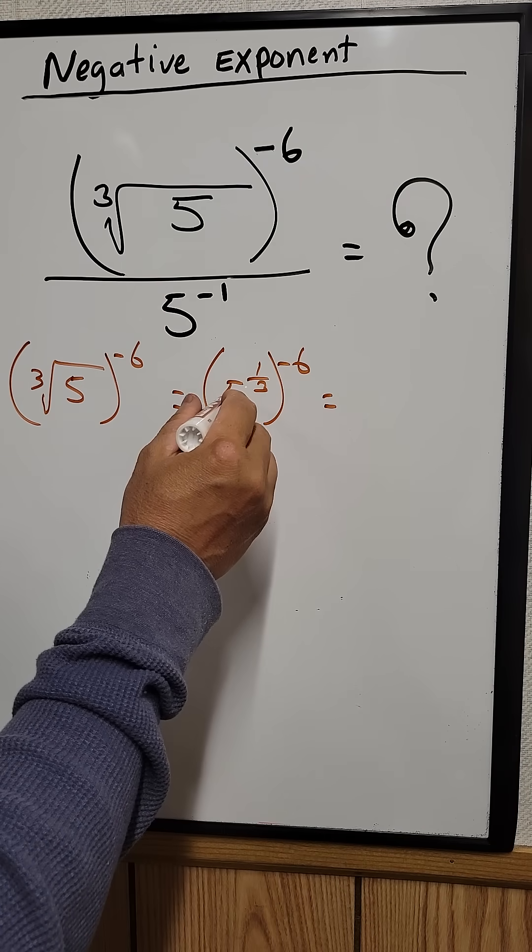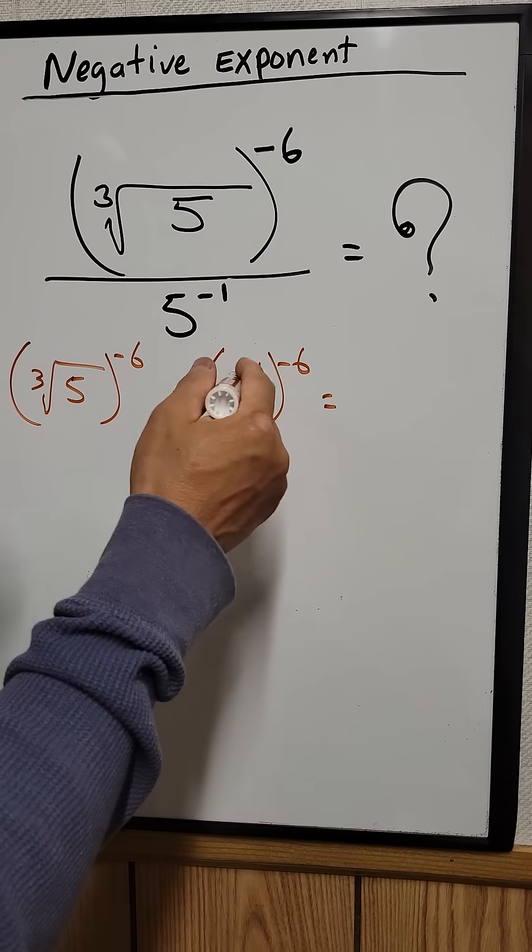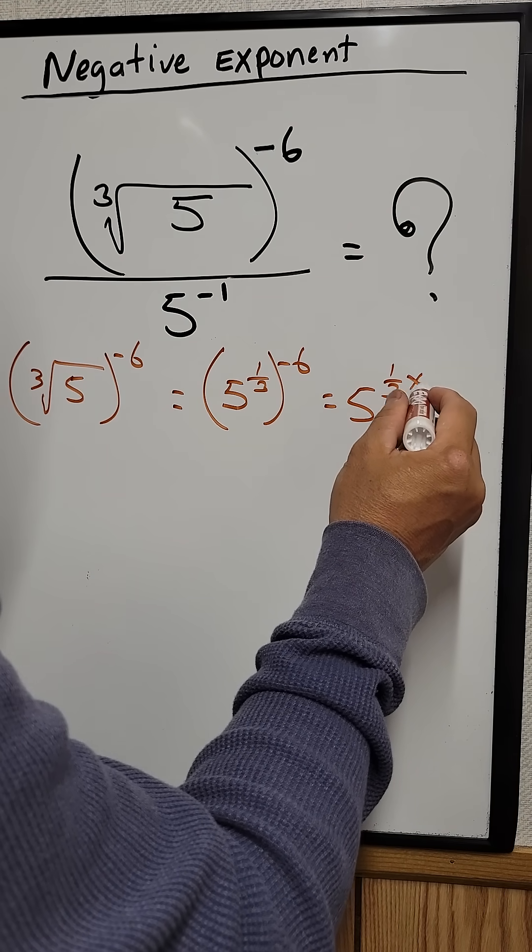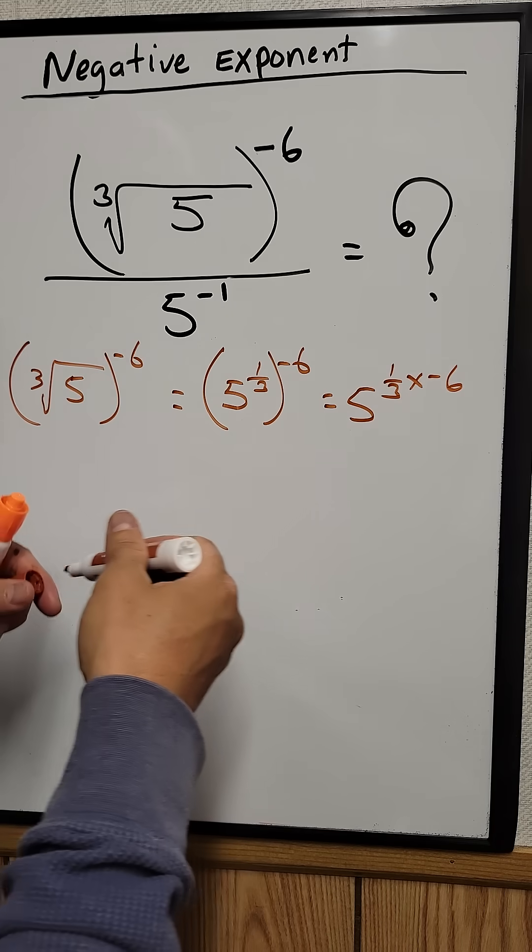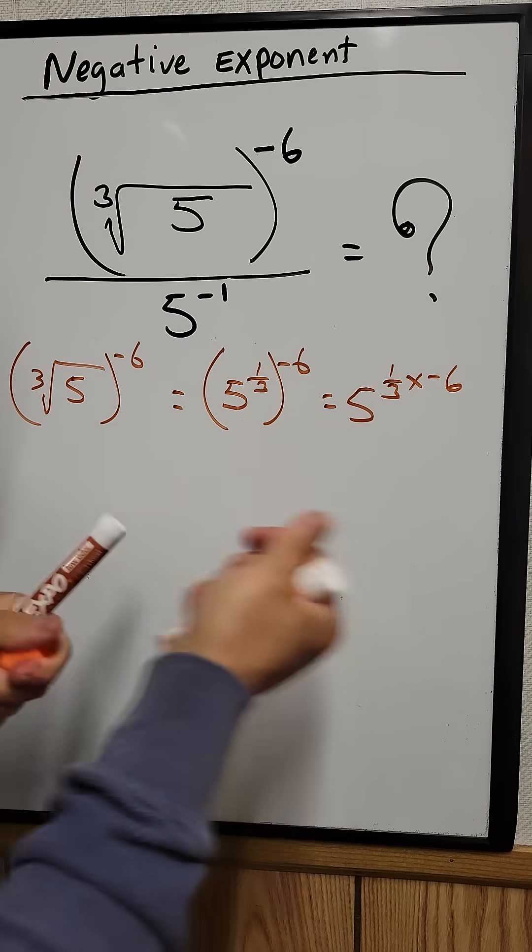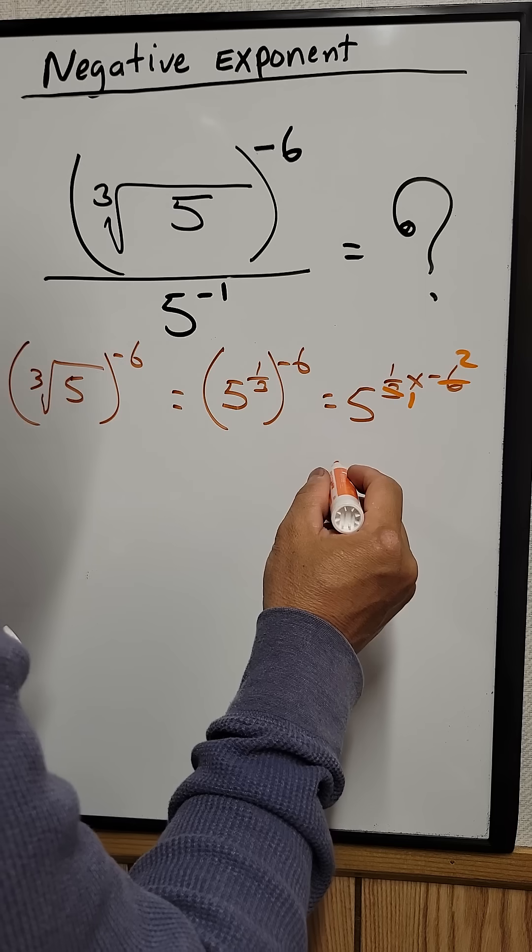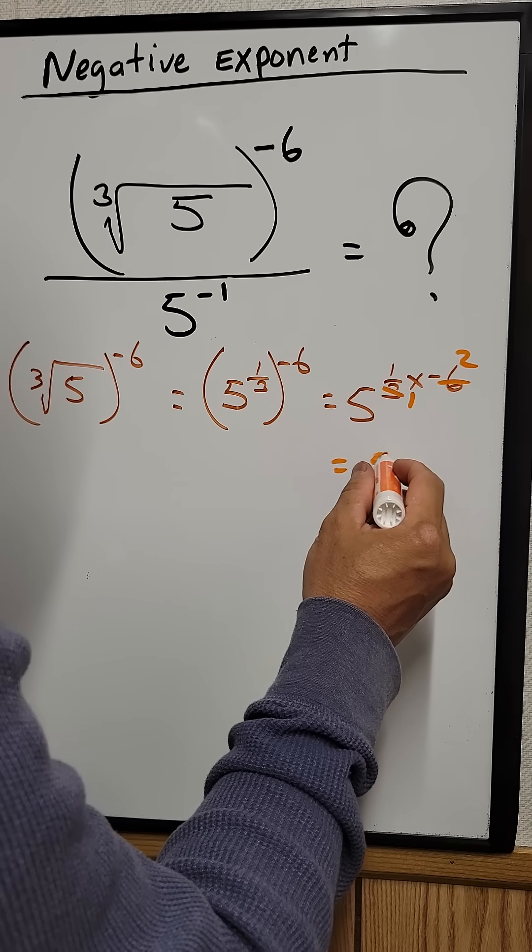So when you raise a power to a power, all you need to do is just multiply the exponents. So 5 raised to the 1 third times negative 6. And then we can cancel this out. 1, this becomes 2. So all you have left is 5 raised to the negative 2.